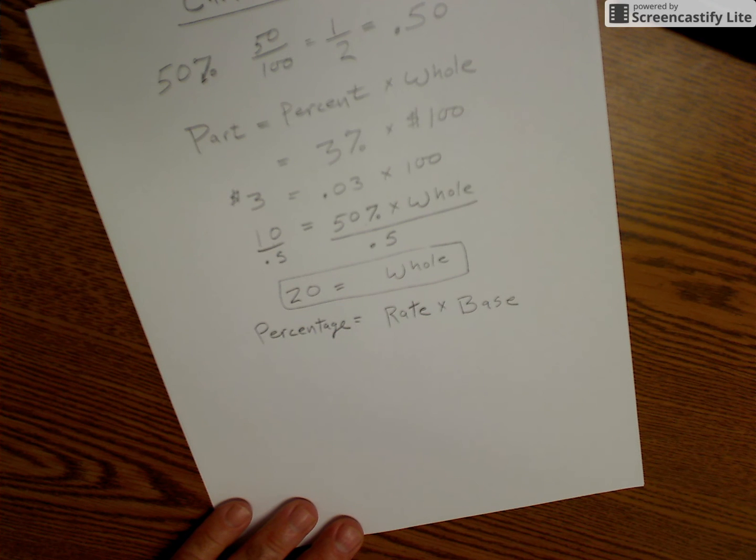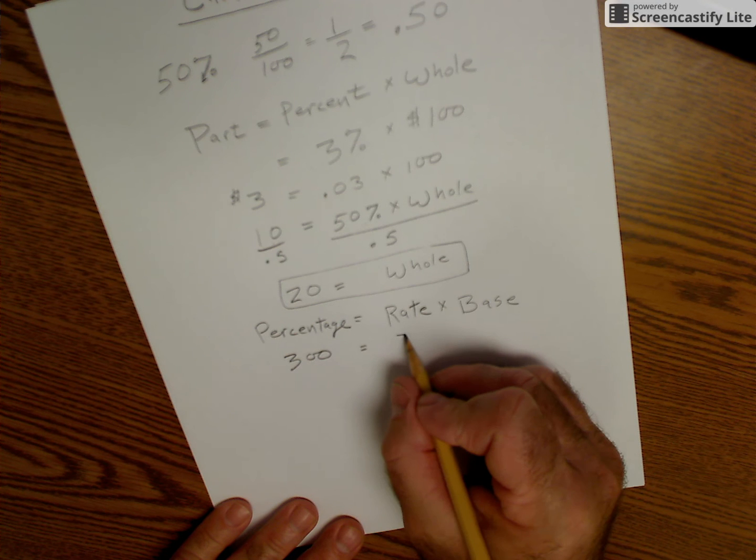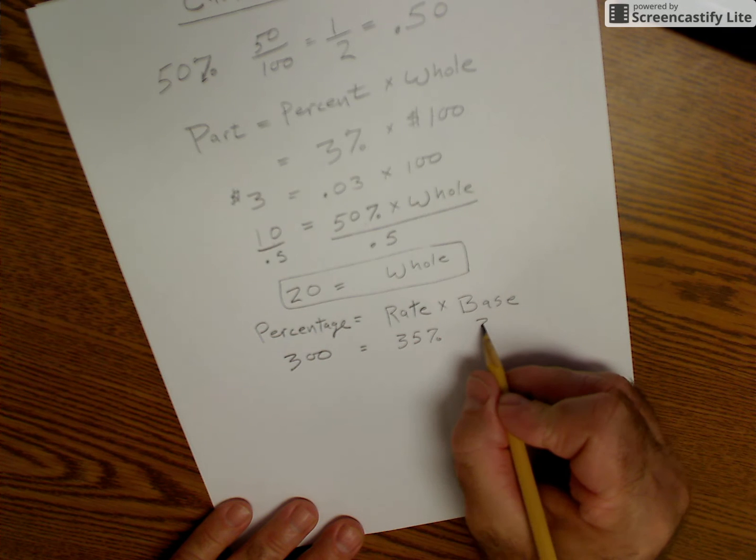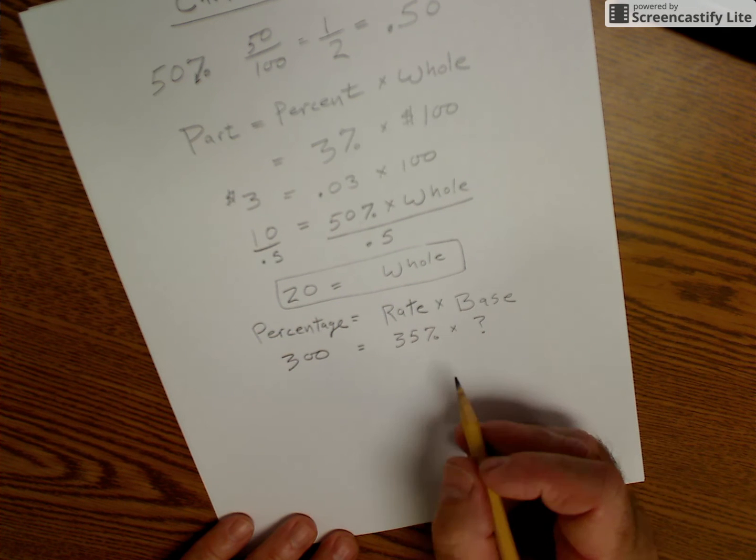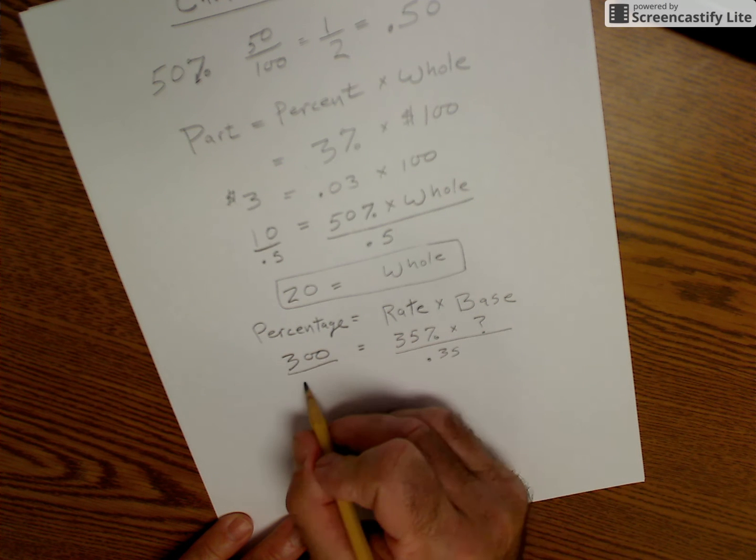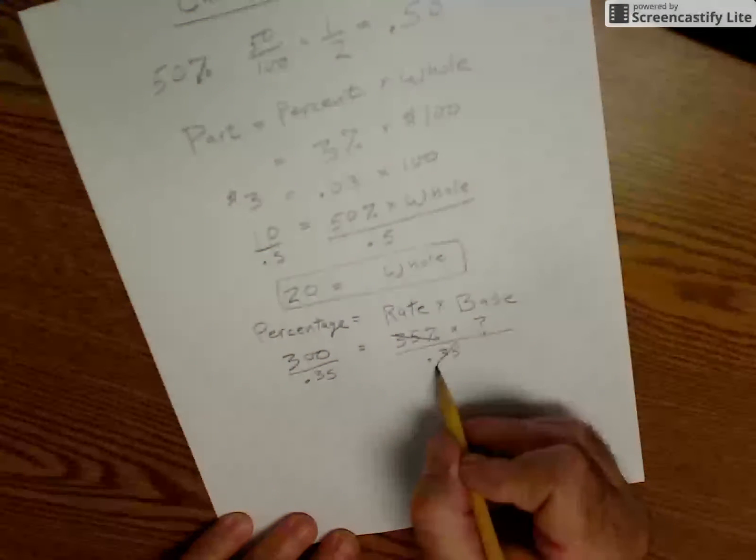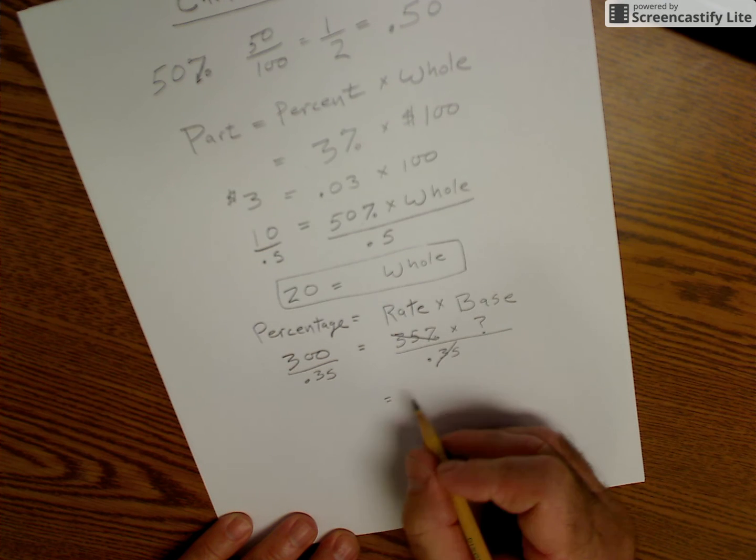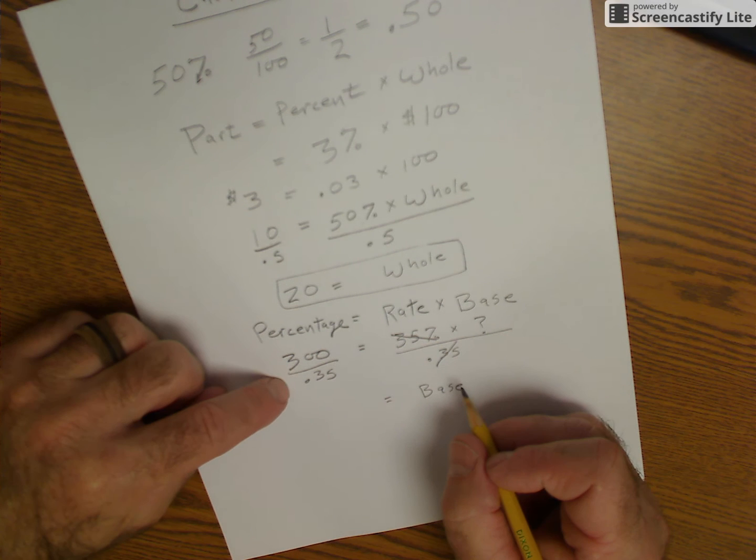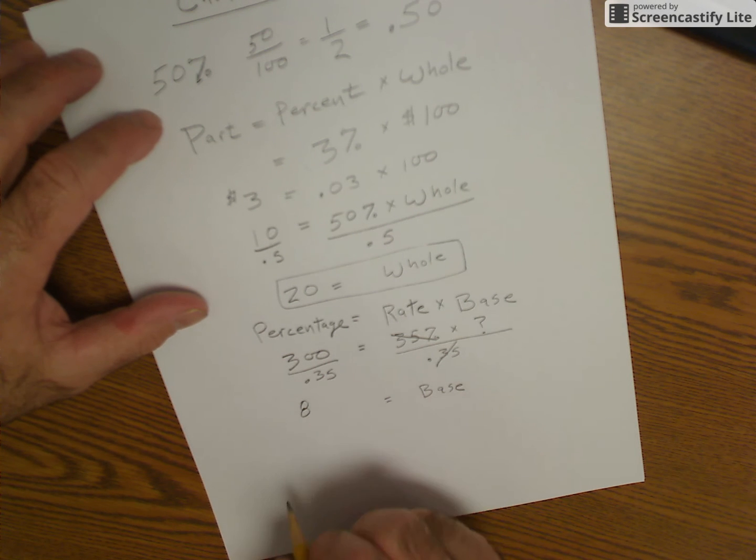So as an example, let's say the percentage is 300. The rate is 35%. And the question is, what is the base? So what is the base? I'm going to divide both sides by 0.35. Divide this by 0.35. Divide this by 0.35. So 35%, 0.35 cancel. So then I could see that the base, I have to use my calculator for this. The base is 300 divided by 0.35, which is 800 and... Wait a second.